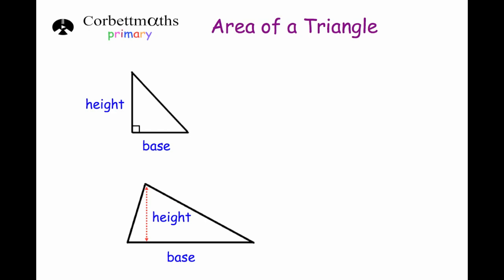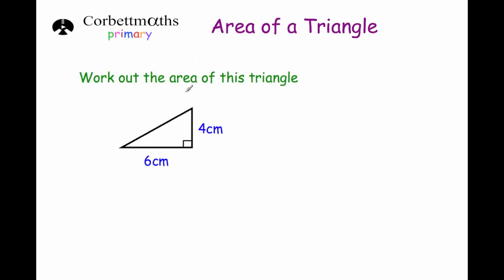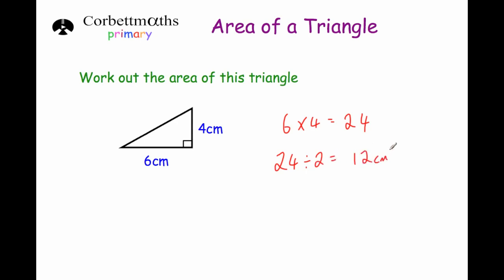Let's have a look at some questions. Our first question says work out the area of this triangle. We've got a triangle with a base of six and a height of four. So I'm going to do six times four which is equal to 24, and then divide that by two. 24 divided by two is equal to 12 centimetres squared. So the area of this triangle is 12 centimetres squared.